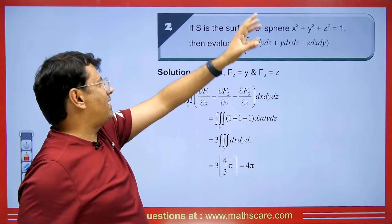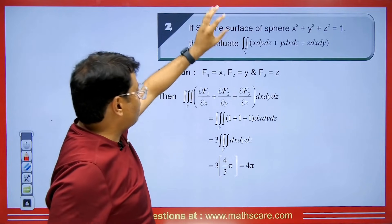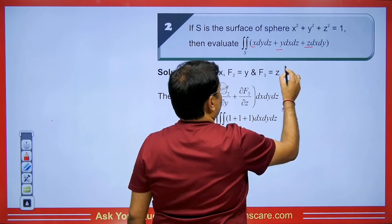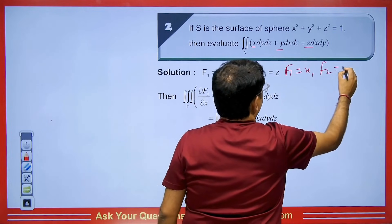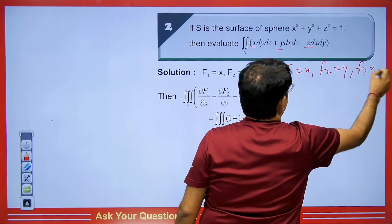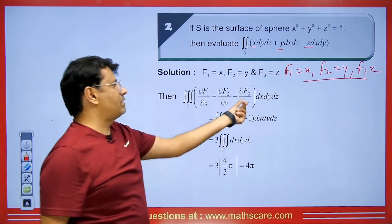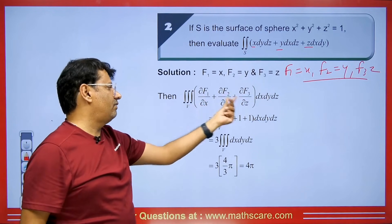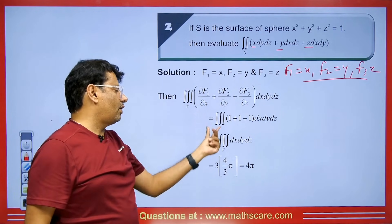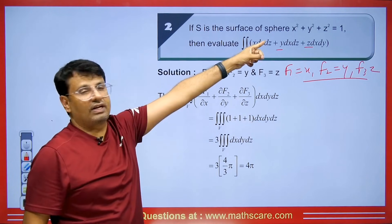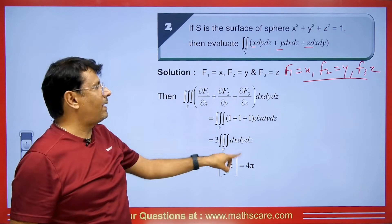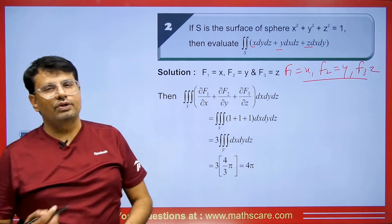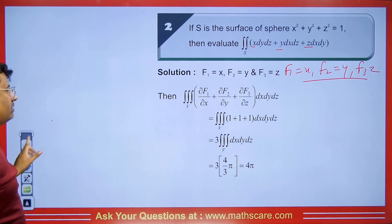Let S be the surface x² + y² + z² = 1. Find the value of the surface integral. Here f1 = x, f2 = y, f3 = z, so the divergence is 1 + 1 + 1 = 3. The triple integration becomes 3 times the volume of the unit sphere, which is 4/3 π. So the answer is 3 × (4/3 π) = 4π. This is how we apply the Gauss Divergence Theorem easily.